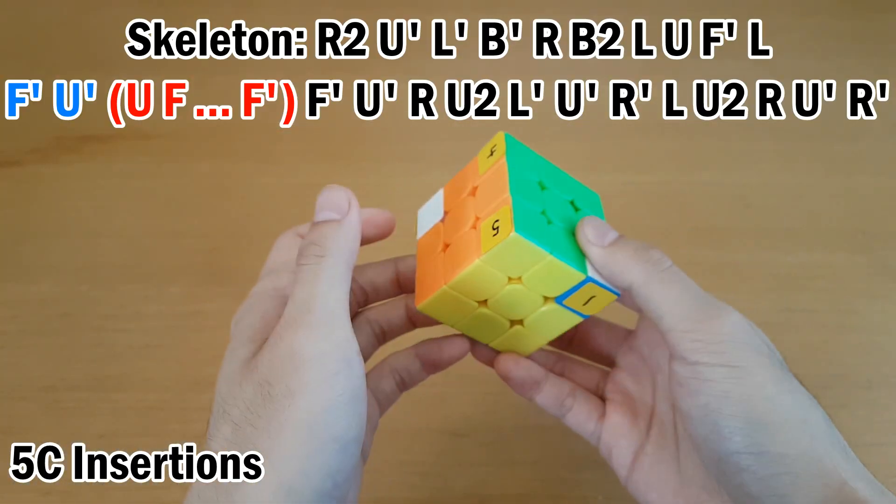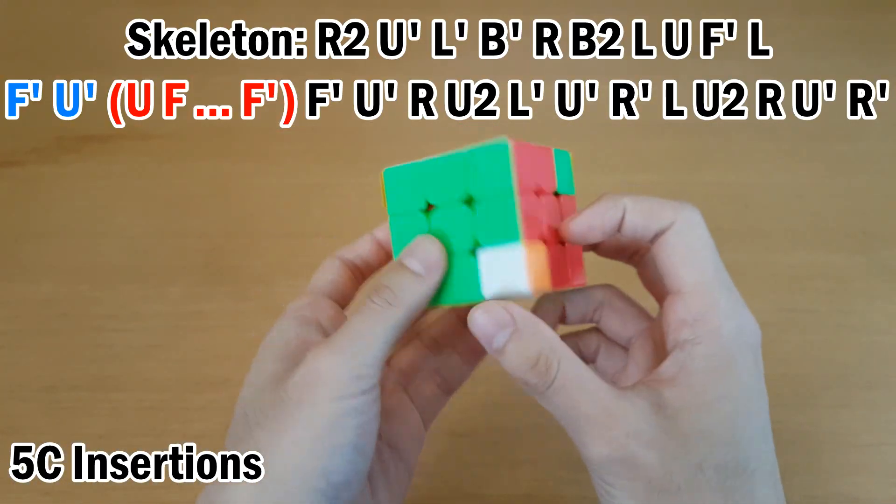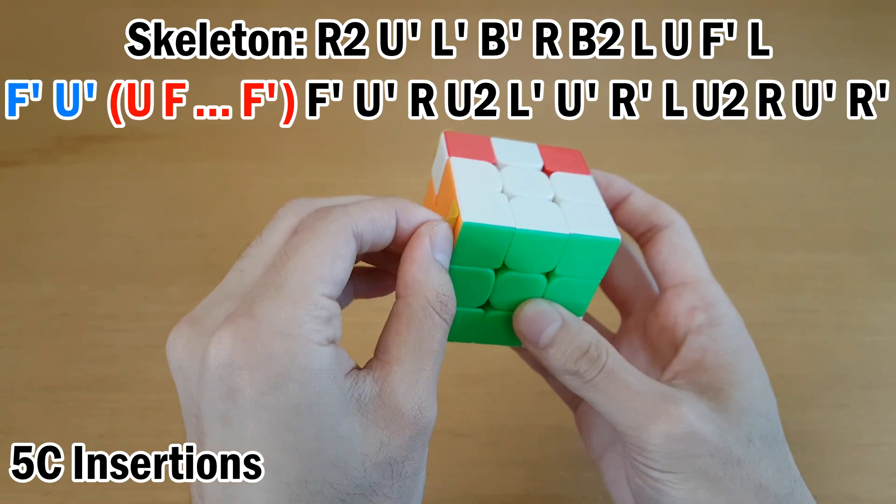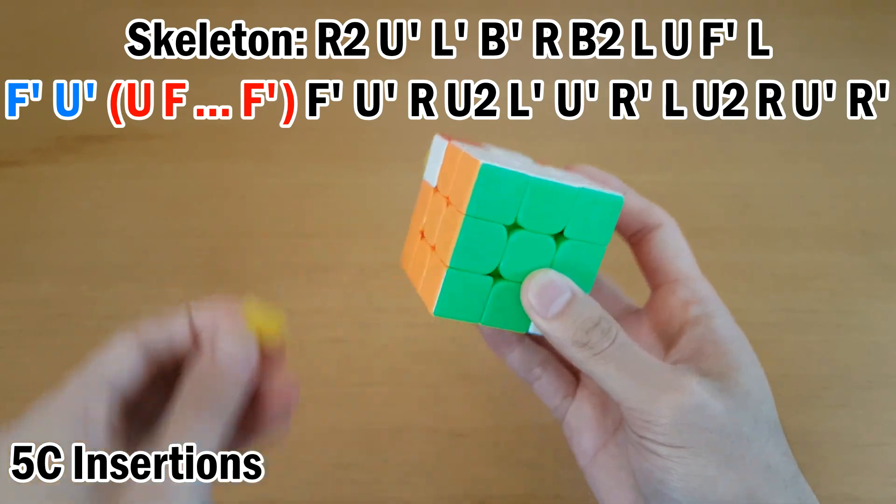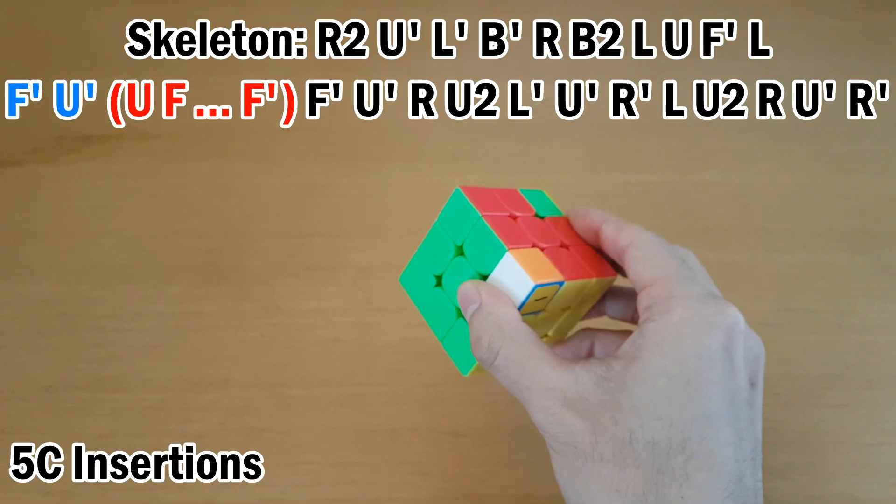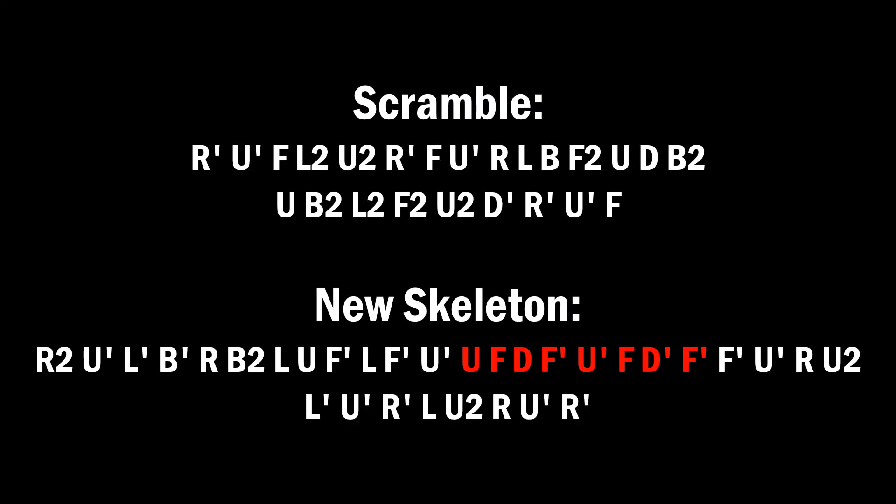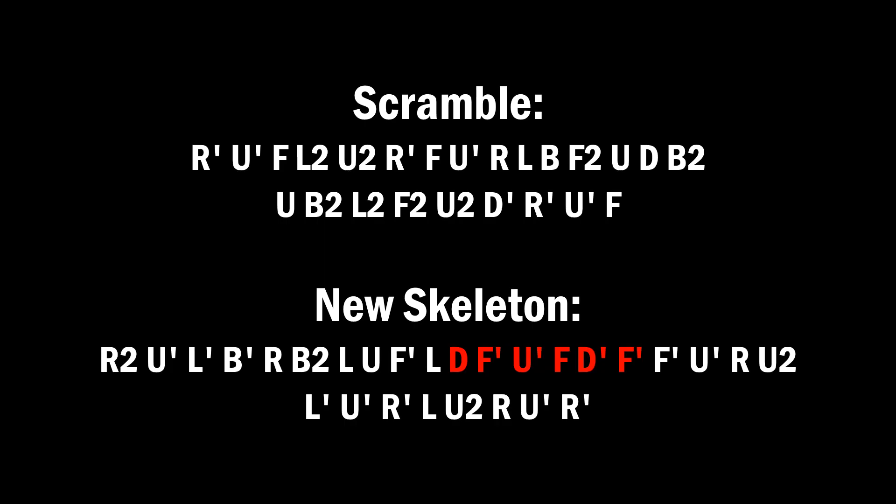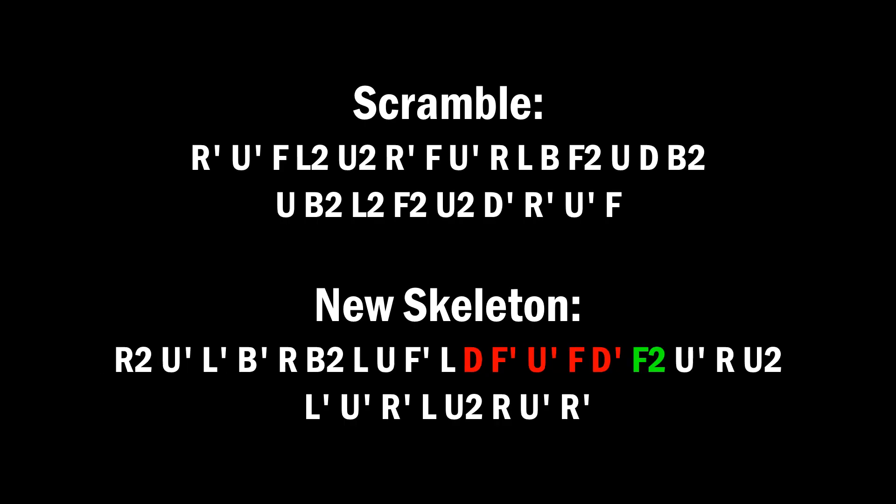So if you've done that first commutator correctly, what should happen is only three corners are left unsolved. So what you can do is remove these stickers right here and just do a normal three corner skeleton. But make sure you write out a new skeleton before you do that. And the reason this is important is because now the moves in the skeleton have changed and you can try your three corner insertion at different spots.